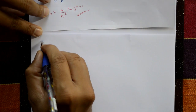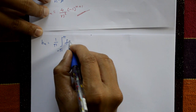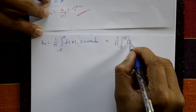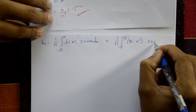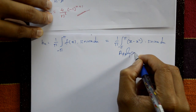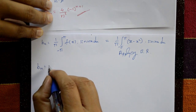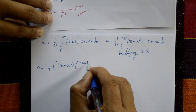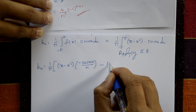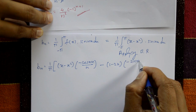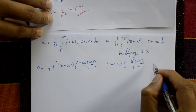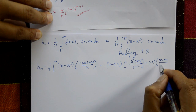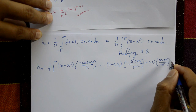bₙ is equal to (1/π) times the integral from -π to +π of f(x)·sin(nx) dx. That is (1/π) times the integral of (x - x²)·sin(nx) dx. Applying Bernoulli's rule: u = x - x², v = sin(nx). Result: (x - x²)·(-cos(nx)/n) minus (1 - 2x)·(-sin(nx)/n²) plus (-2)·(cos(nx)/n³), with limits -π to +π.